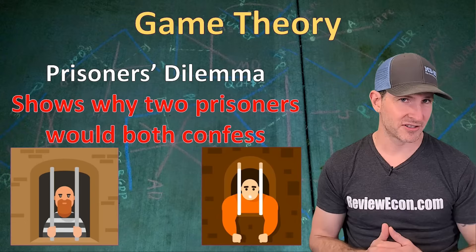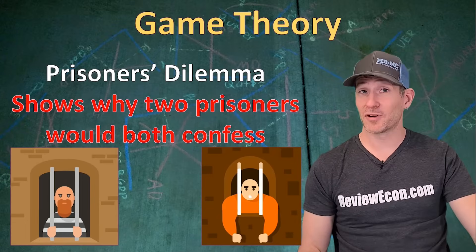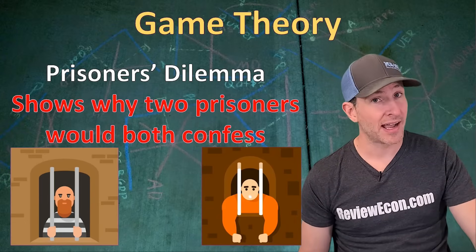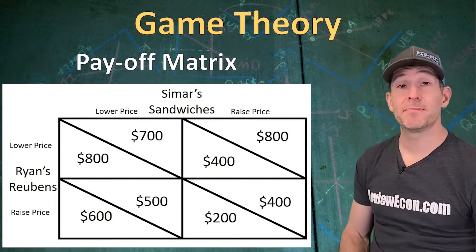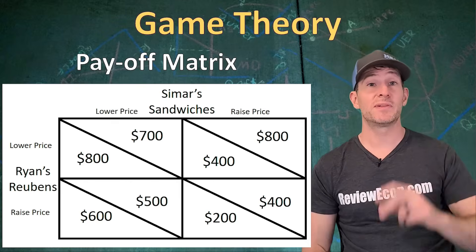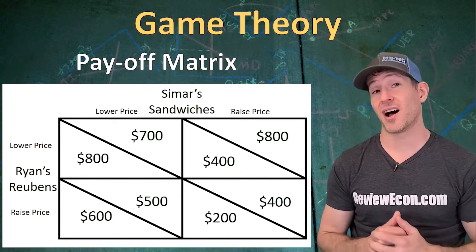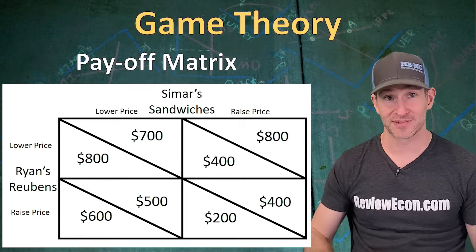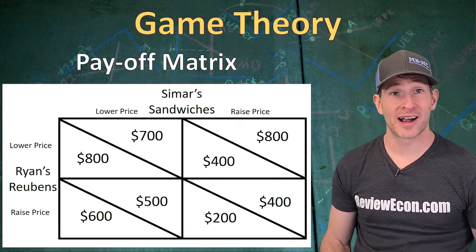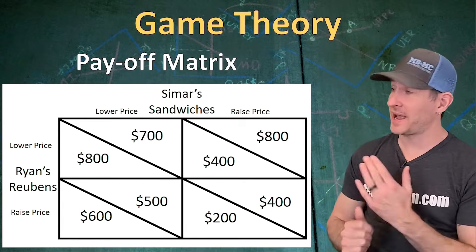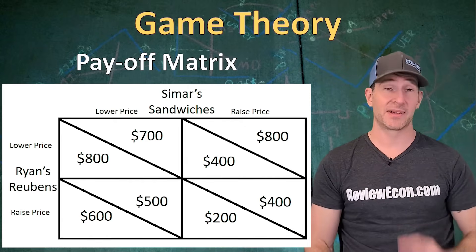We are not going to go into all of the prisoner's dilemma, but you can read about it at ReviewEcon.com. Instead, we are going to jump right into the economics and apply oligopoly behavior to game theory. Here we have a game theory payoff matrix. We have two businesses, which means it is a duopoly. A duopoly is an oligopoly with just two firms. The firms we have here are Simmer's Sandwiches and Ryan's Rubens. You are likely to see a payoff matrix similar to this one on your next AP microeconomics exam.